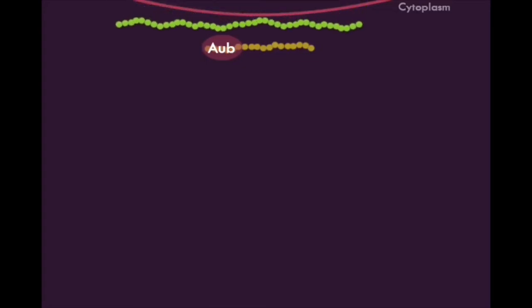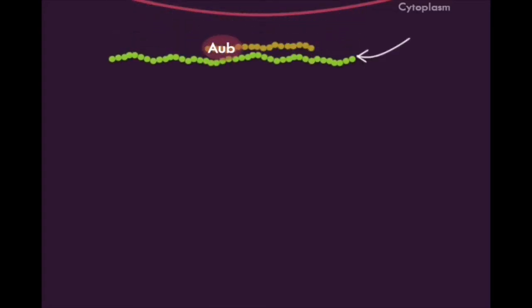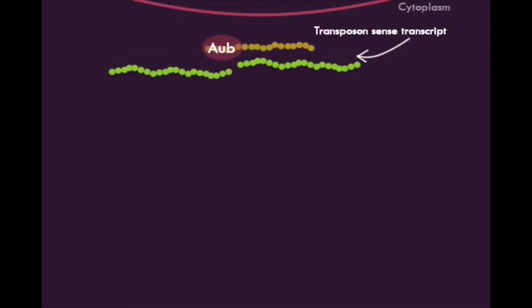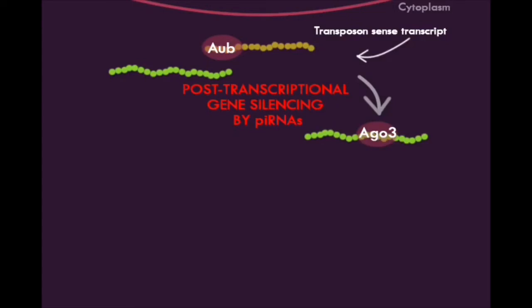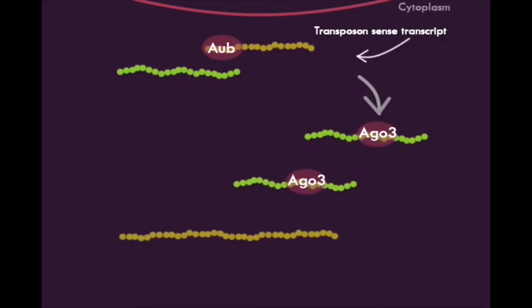Aubergine and PIWI-associated antisense PI-RNAs bind to transposon sense transcripts resulting in the cleavage of the transposon transcript. These cleaved PI-RNA strands can associate with Argonaute 3 and various other proteins. This cleavage is a mechanism of post-transcriptionally silencing transposon sequences by PI-RNAs.